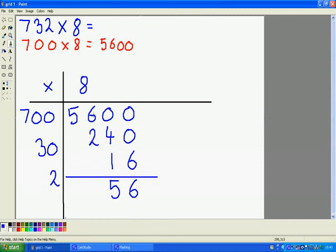So that's 50. 600 add 200 is 800. And 5,000 add 0 add 0 is 5,000. So my final answer is 5,856.